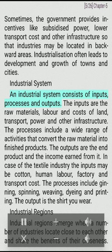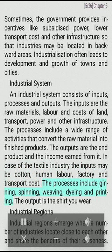An industrial system consists of inputs, processes, and outputs. The inputs are raw materials, labor, and costs of land, transport, power, and other infrastructure. The processes include a wide range of activities that convert raw material into finished products. The outputs are the end product and the income earned from it. In the case of textiles, inputs may be cotton, human labor, factory and transport costs. The processes include ginning, spinning, weaving, dyeing, and printing. The output is the shirt you wear.